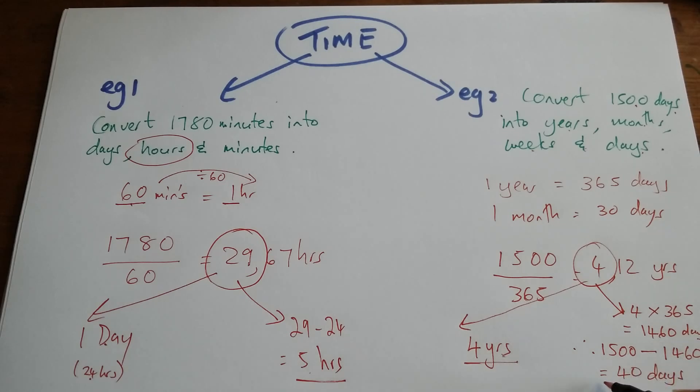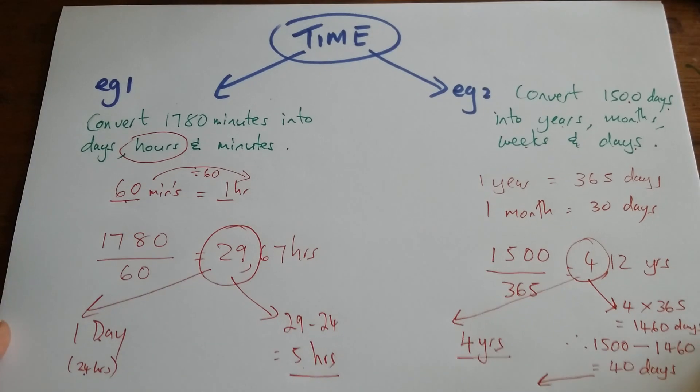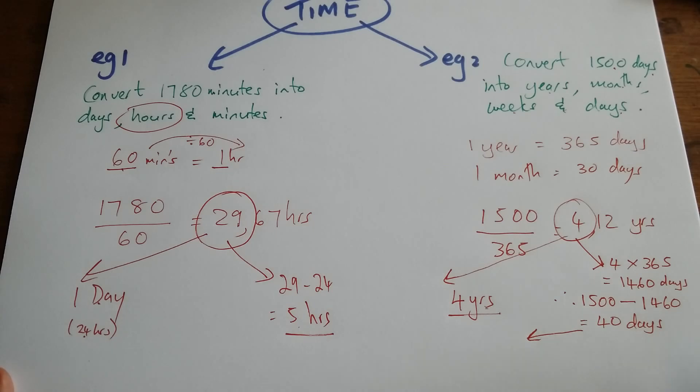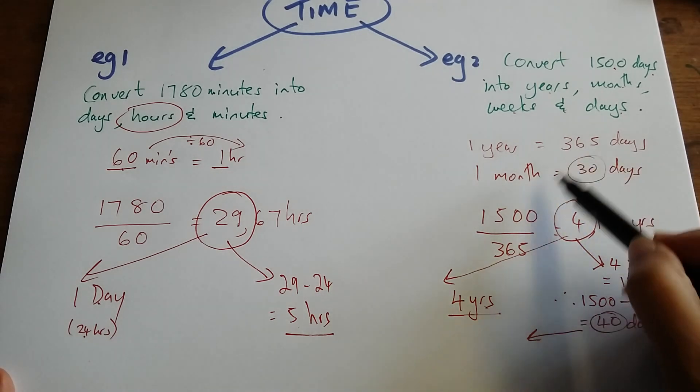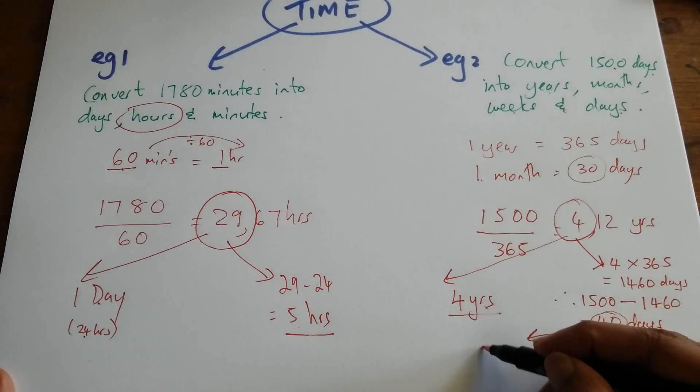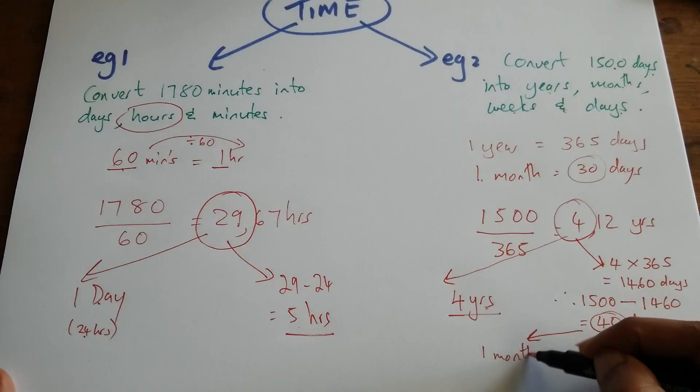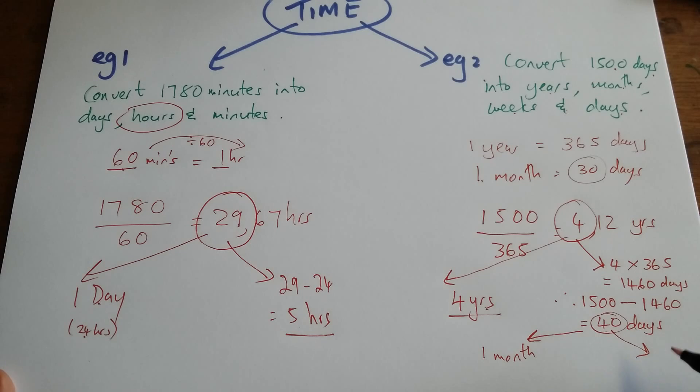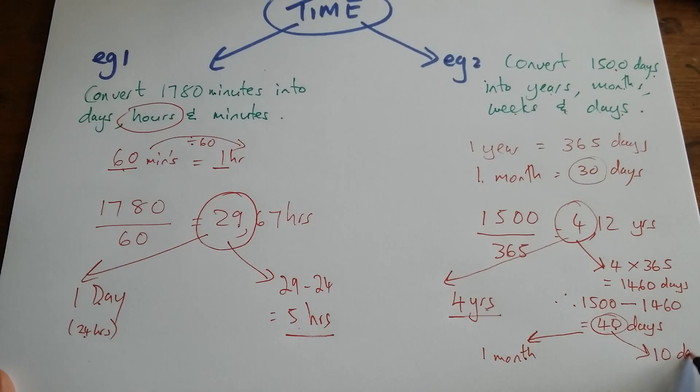Now, my days, I'm going to convert it into months. So if I'm taking an average of 30 days for 1 month, from 40 days, I can then remove 1 month. And my balance is 40 minus the month, which we're saying is 30 days. That leaves me 10 days.